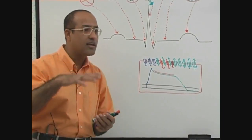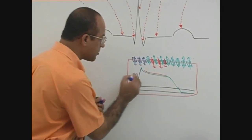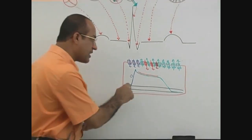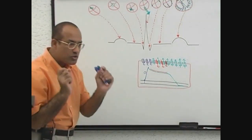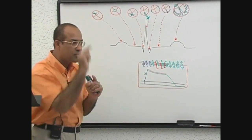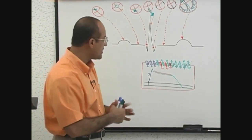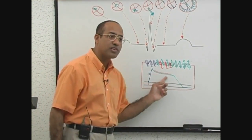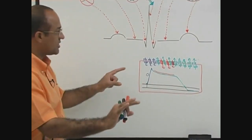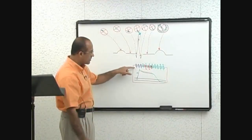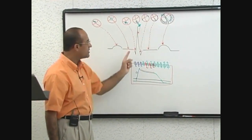Let's recap: myocardial cells are undergoing depolarization, action potential is showing upstroke — the zero phase of depolarization — and at that very time the ECG recording is showing QRS complex. So whenever you see a QRS complex, it means that at that very moment the ventricular cells are undergoing depolarization. When you see the ST segment, the action potential is in plateau phase. And when the T wave is there, that signifies repolarization. So you can correlate things in three ways: electrical events in the cell, action potential, vectorial analysis, and ECG pattern formation.